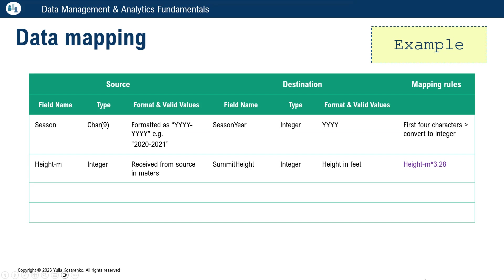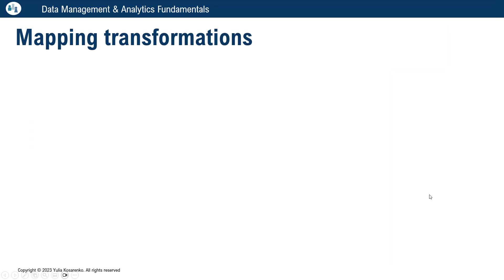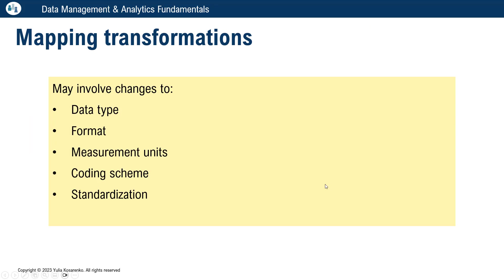Here's an example of a very simple data mapping table. In real life they're going to get more complicated, but you always think about the source and the different data elements at the source, what are the different data elements at the destination, and the mapping rules — the transformations. How this piece of data is going to end up in the destination field. You may need to change the type of the data, the format, measurement units, the coding scheme, standardize it to a certain list of values, and even more complicated aggregation-type transformations.